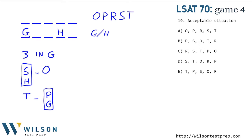We're given the following conditions: the first lecture is in room G, the fourth lecture is in room H, and exactly three of the lectures are in room G. The lecture on S is before the one on O and is in room H. T is before P, which is in room G.